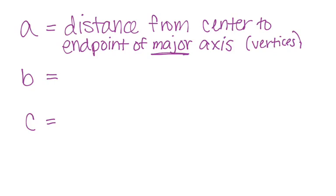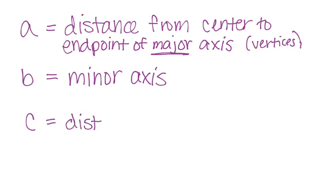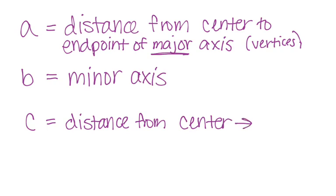B is very similar — it's the distance from your center to the end point of your minor axis, or half the length of your entire minor axis. And C is the distance from the center to the foci. If you recall from graphing ellipses, in order to find the foci we needed to calculate what C was. So anytime you're given information about the foci, you're going to use C. To summarize: A is the distance from the center to the end point of the major axis, B is the distance from the center to the end point of the minor axis, and C is the distance from the center to the foci.